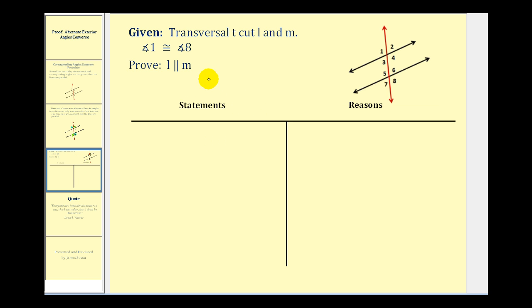So we're going to use this postulate to prove the alternate exterior angles converse. Here's our proof. Transversal T cuts L and M, and we're given that angle one is congruent to angle eight. Our ultimate goal is to get corresponding angles congruent, and therefore we can use the corresponding angles converse postulate.